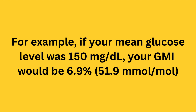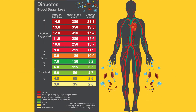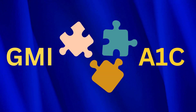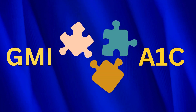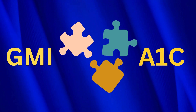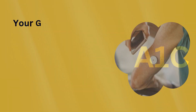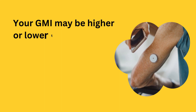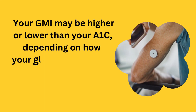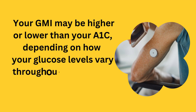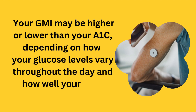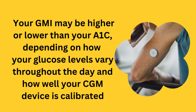GMI is not the same as A1c, but it can give you an estimate of what your A1c would be based on your CGM data. However, your GMI and your A1c may not always match because they are derived from different sources and methods. Your GMI may be higher or lower than your A1c depending on how your glucose levels vary throughout the day and how well your CGM device is calibrated.